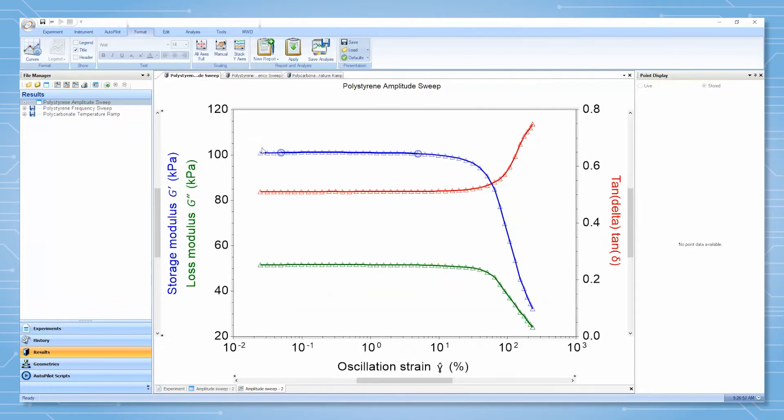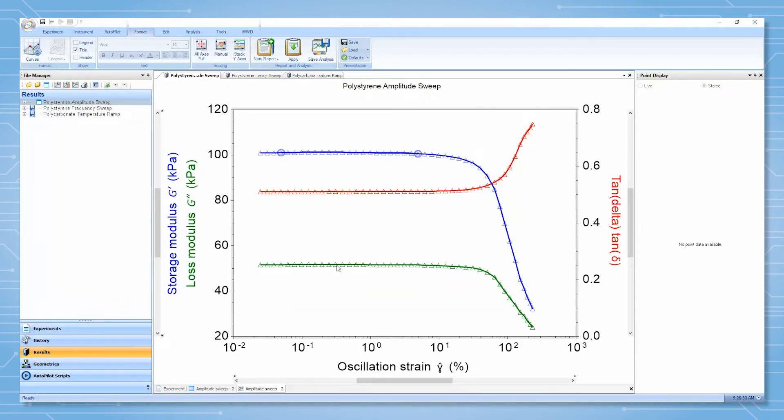The viscoelastic properties such as storage modulus, loss modulus, and tan delta are independent of strain within the linear region. At the end of the linear region, the critical strain, these properties become strain dependent.